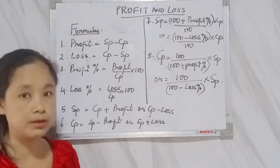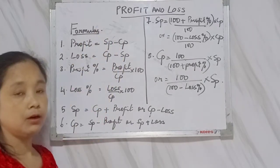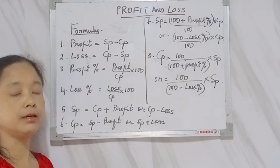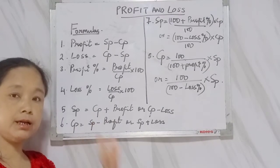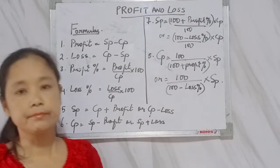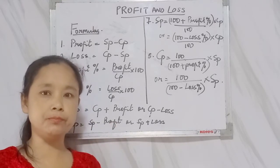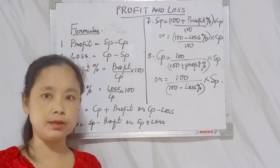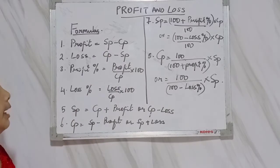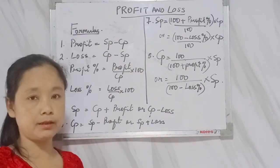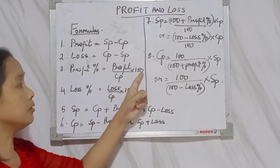Profit is selling price minus cost price. When you subtract cost price from selling price, you get profit. Loss is cost price minus selling price — that means here the selling price is less than the cost price. For example, if you buy a pencil for five rupees and sell it for three rupees, you are making a loss of two rupees. Profit percent is profit divided by CP, multiplied by 100.